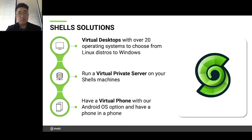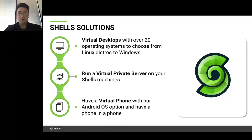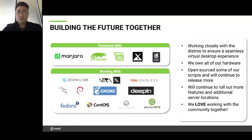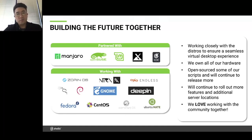If you want to run a virtual private server, we have options for that as well — you can get your own IP address and run whatever you need to as you would a typical VPS service. With our Android OS option, we've been working hard on creating the virtual phone, where we have the opportunity to provision phone numbers, so you could have something almost like a phone by opening up Shells within a mobile app on your phone or on the browser. We've announced partnerships with KDE, MX Linux, Linux Mint, OpenSUSE, as well as Manjaro.